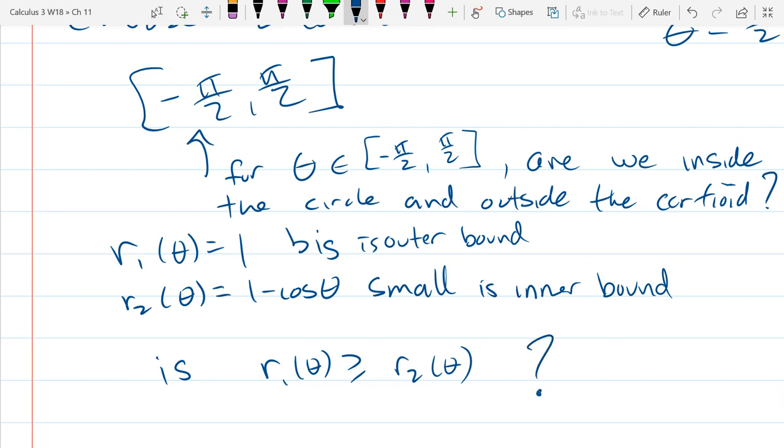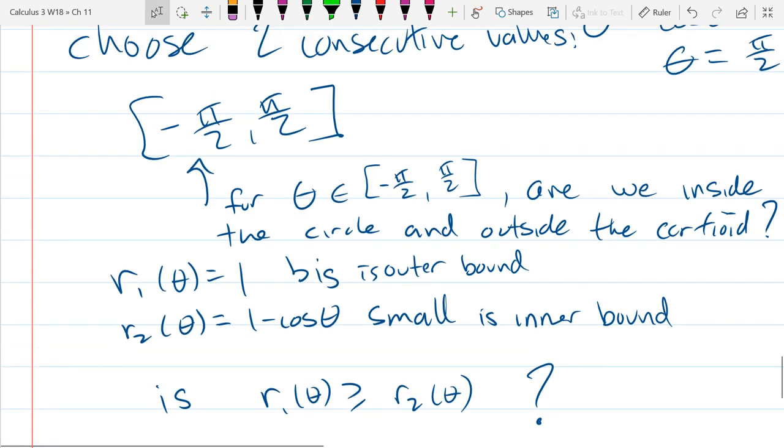So our first function, I'm going to call it R₁... So it's supposed to be inside the circle, so that's the big function. And the small function was 1 - cos θ. So the question is, is R₁ actually bigger than R₂ on this interval? So the reason I called the circle big, because we're supposed to be inside the circle, so it's the outer bound. So big is the outer bound. And we're supposed to be outside the cardioid, so this is the inner bound. So any questions about that idea of why the outer bound is the big one, the inner bound is the small one?